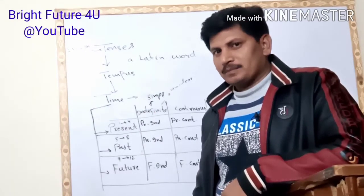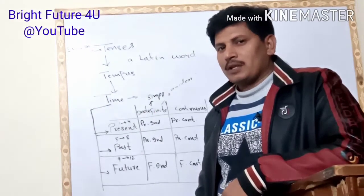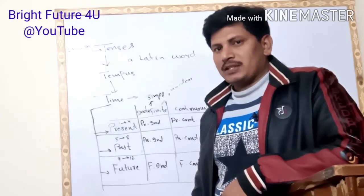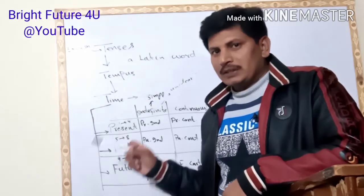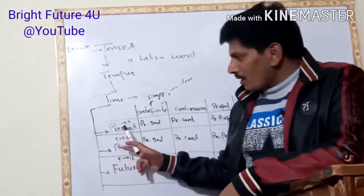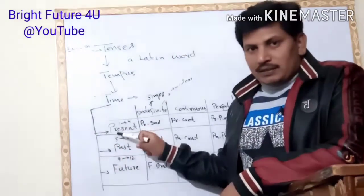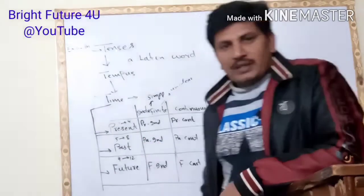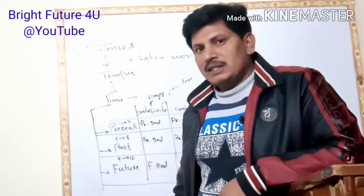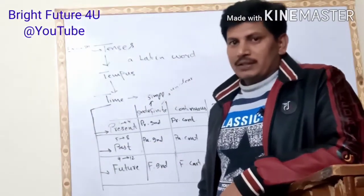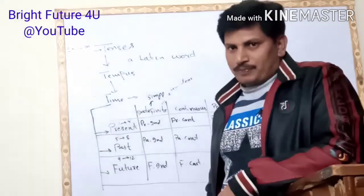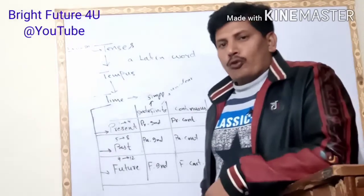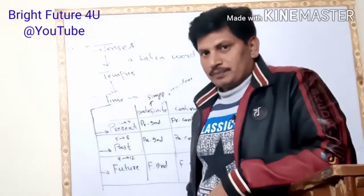Time, or tense, has three basic states: the first one is present, the second one is past, and the third one is future. These are the three basic states of time or tense, and each of these has four common substates.